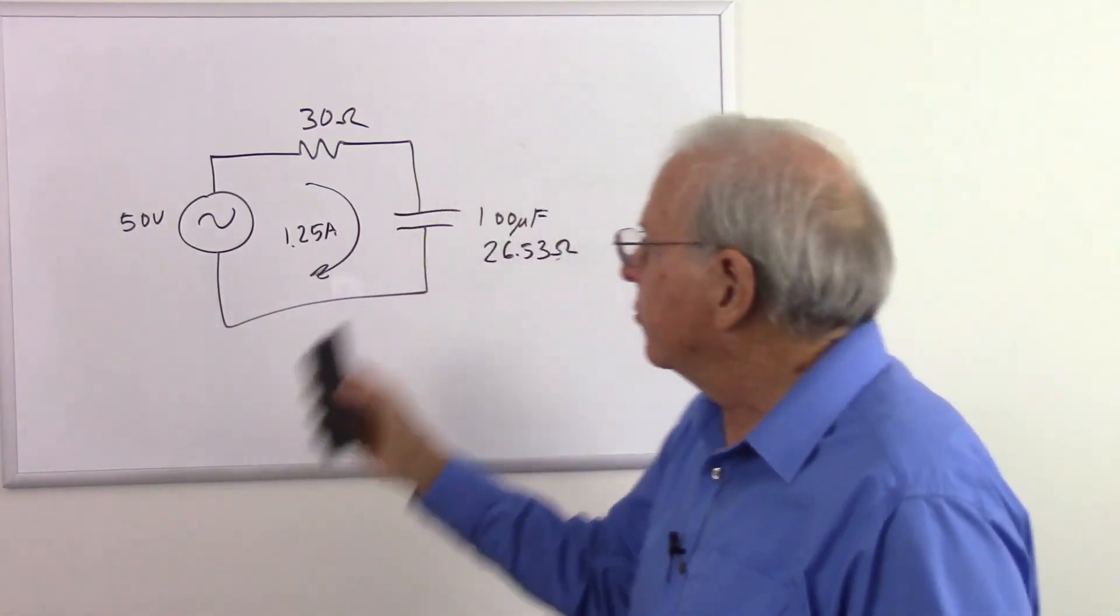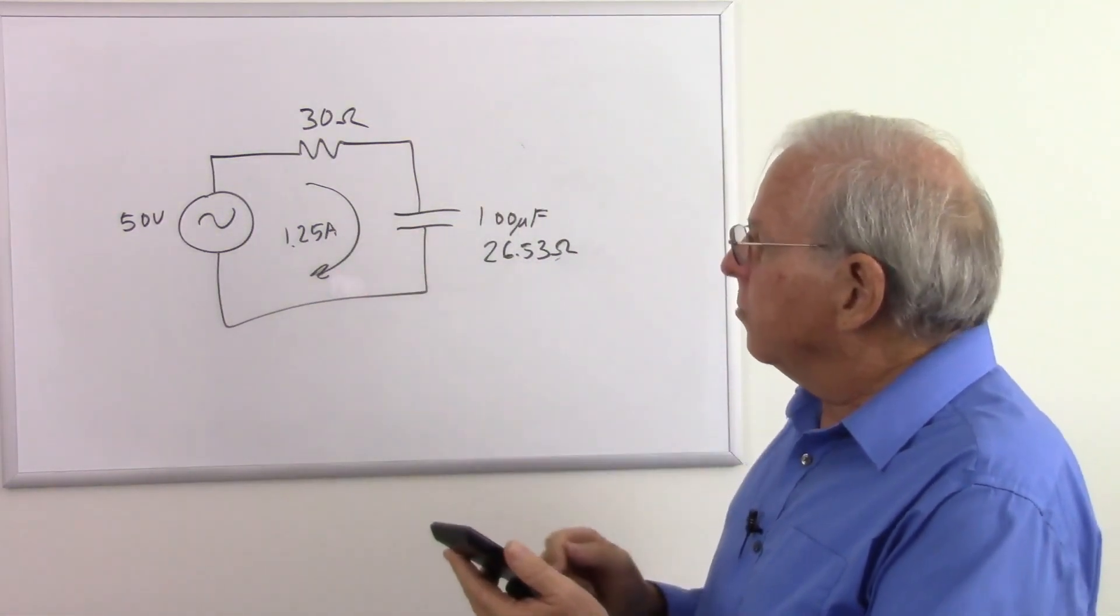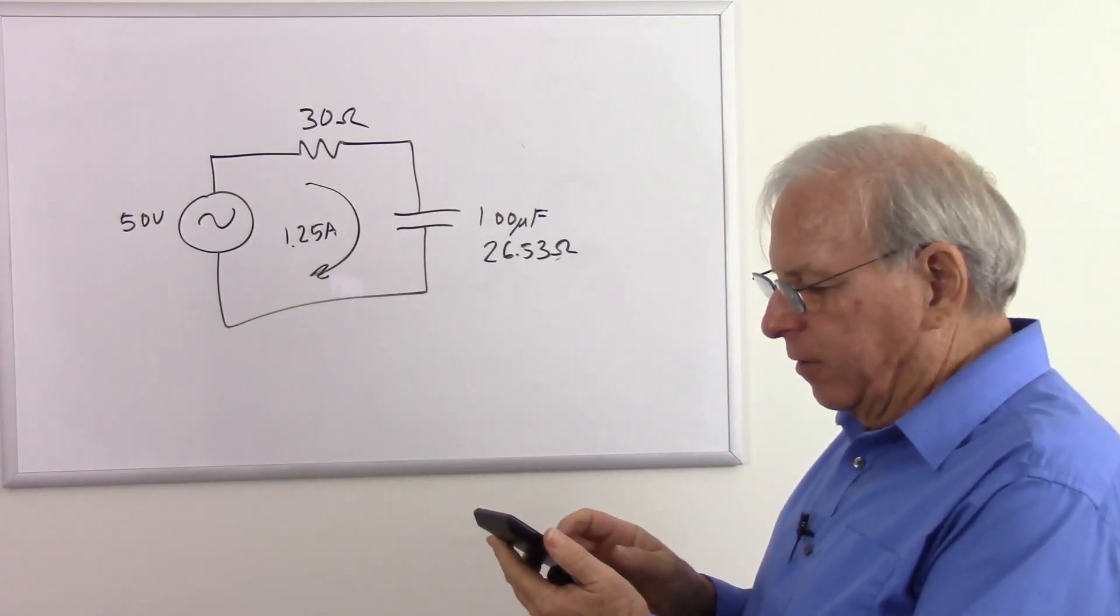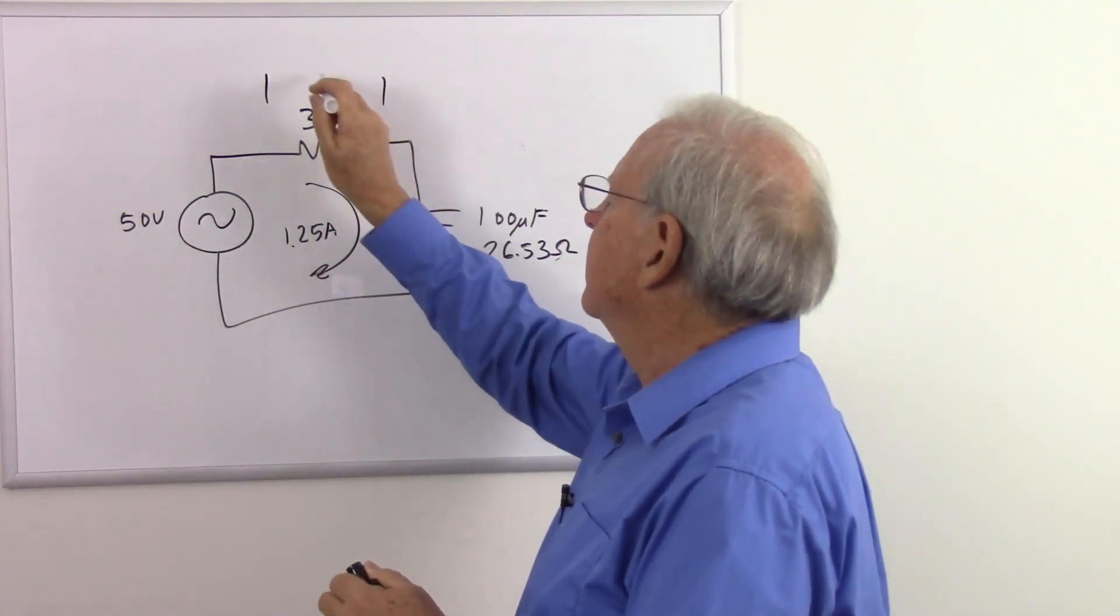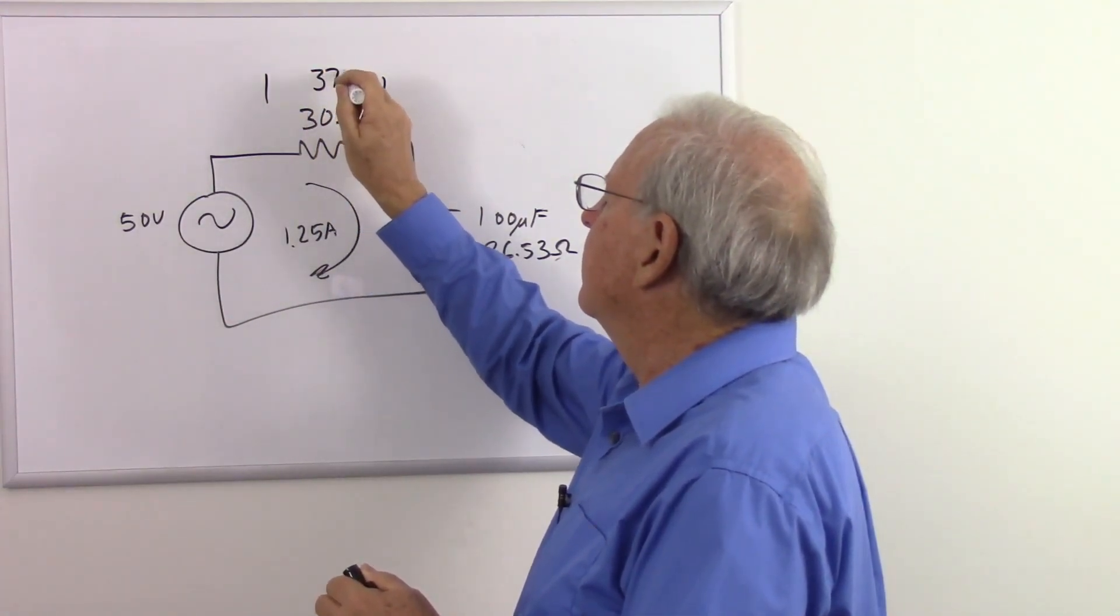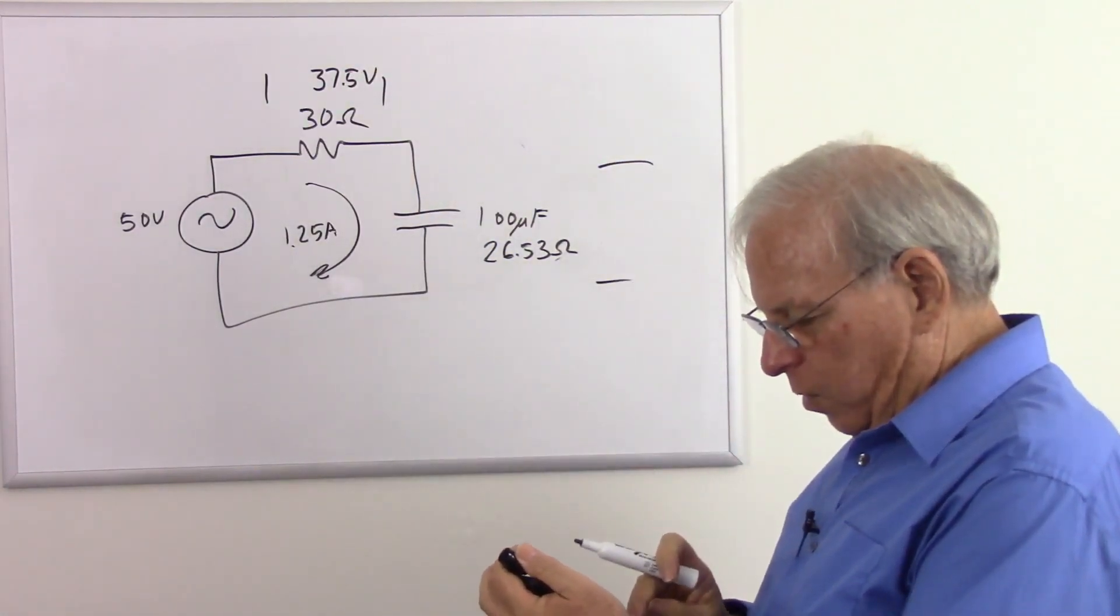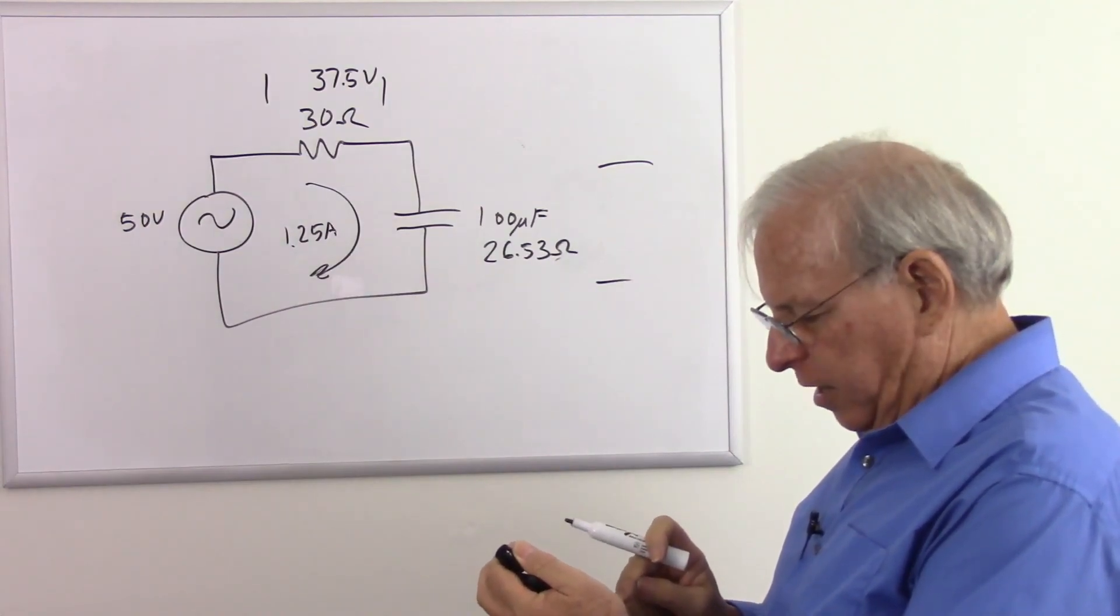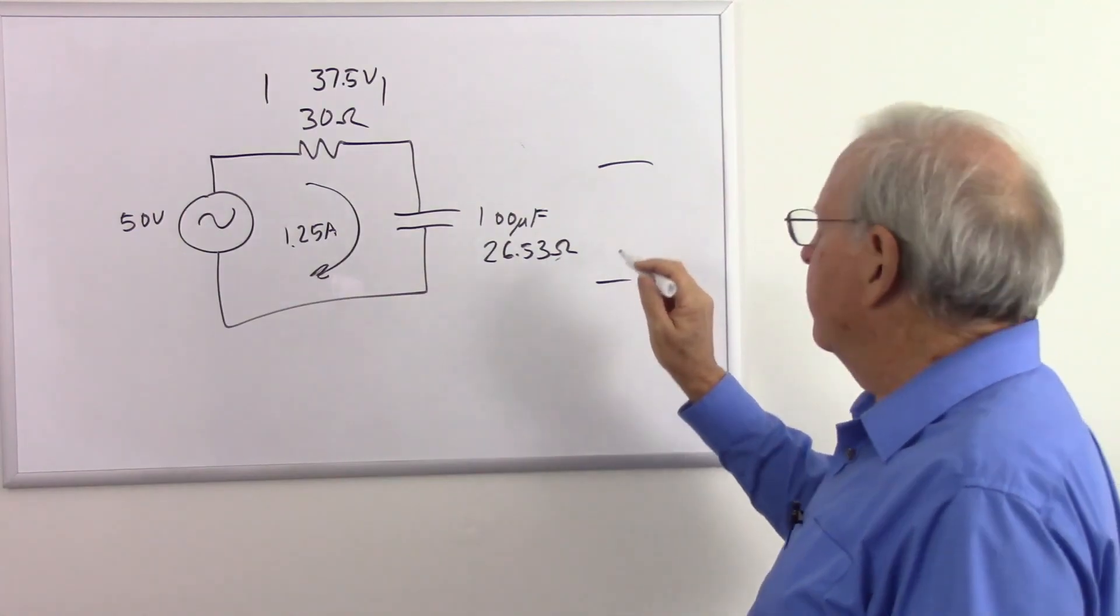So now what we're going to do is calculate the voltage across each of these. So if you don't know your volts, you multiply. So 1.25 times 30 equals 37.5 volts here. And over here we have 1.25 amps times 26.53 equals 33.16 volts.